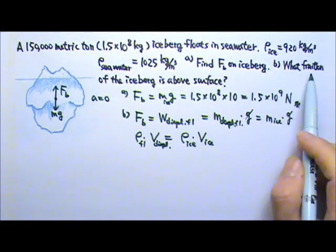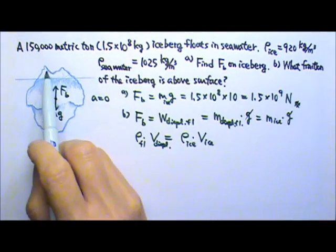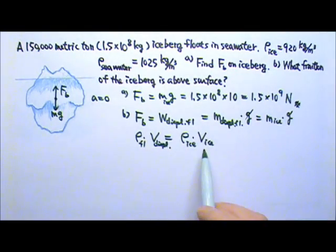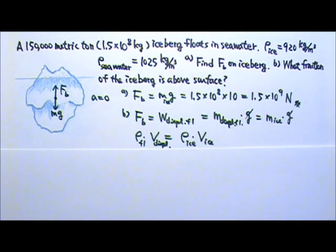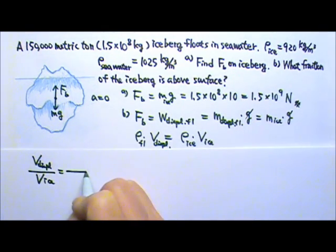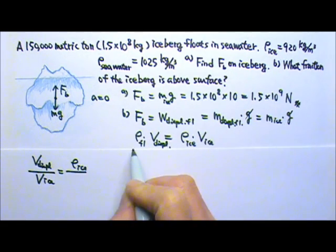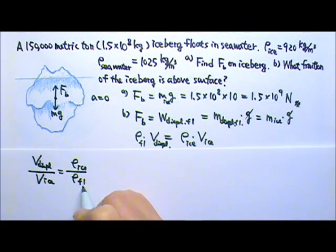For part B, we're looking for the fraction of the iceberg above the surface. We have volume terms, which means we can get some fraction from this equation. If I divide by the volume of the ice on both sides and divide by the density of the fluid on both sides, I get volume displaced over volume of the ice equals the density of the ice divided by the density of the fluid.